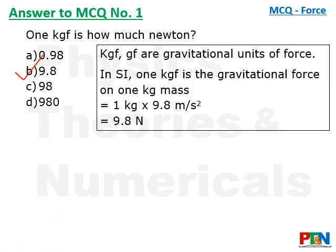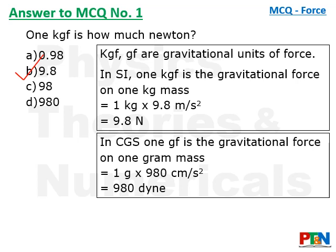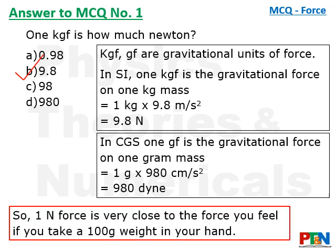To understand it: KGF and GF are basically gravitational units of force. In SI, one KGF is the gravitational force on one kg mass. If you take one kg weight in your hand, the gravitational force you feel downward is one KGF, that is one kg multiplied by 9.8 m/s², which is 9.8 Newton. Similarly in CGS units, it is gram-force: one gram into 980 cm/s² that is 980 dynes. This gives a very easy understanding of how much is one Newton force. One Newton force is like taking a 100-gram weight in your hand — those 100-gram weights used in balancing scales in shops. The force you feel downward holding that 100-gram weight is one Newton.